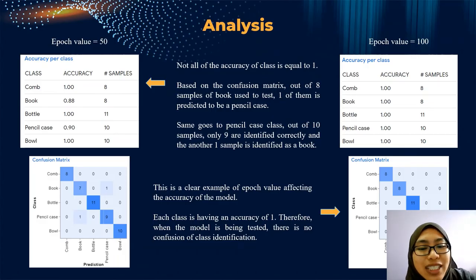Continuing from Harvin's presentation, I'm going to add a little bit more on the comparison between when the epoch value is equal to 50 and when the epoch value is equal to 100. As you can see, when I assign the epoch value to 50,